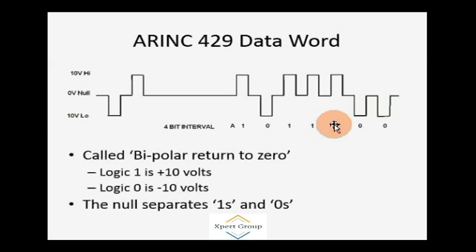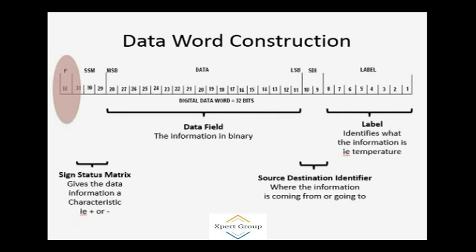How is a data word constructed? Basically, a data word is constructed of four bit intervals. Data word construction: first, you need to understand that the data word is 32 bits, from bit 1 to bit 32. These 32 bits are divided into different portions, and these portions provide distinct kinds of information contained in this data word.